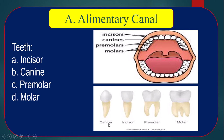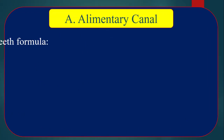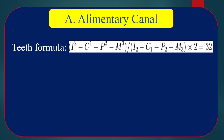The teeth formula shows the position and number of each type of teeth: I for incisor, C for canine, P for premolar, and M for molar. For one half jaw: incisor 2, canine 1, premolar 2, molar 3 — totaling 8 per half jaw, 16 per jaw, and 32 teeth in total for an adult human.